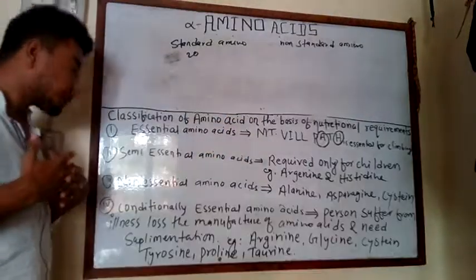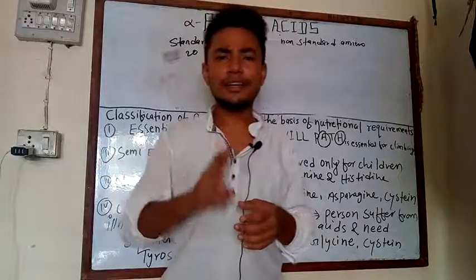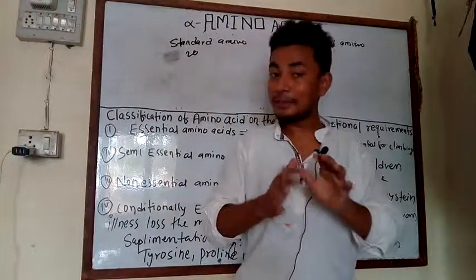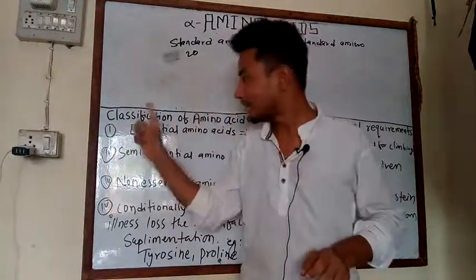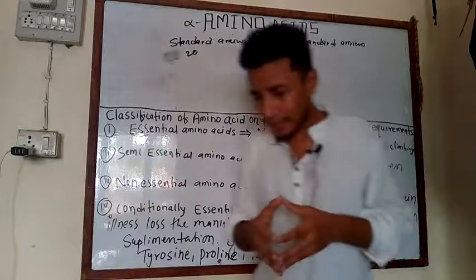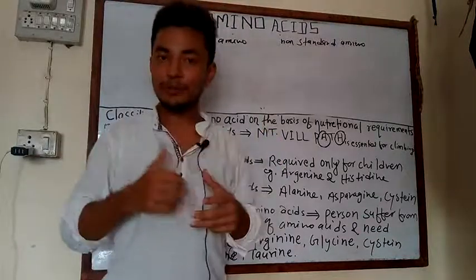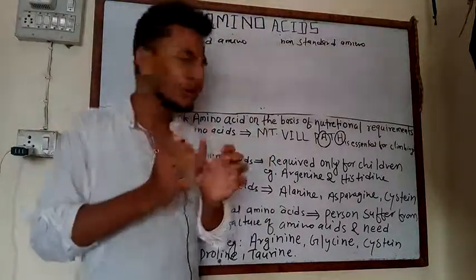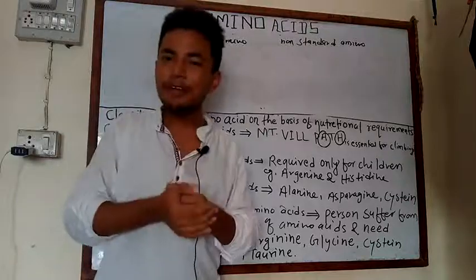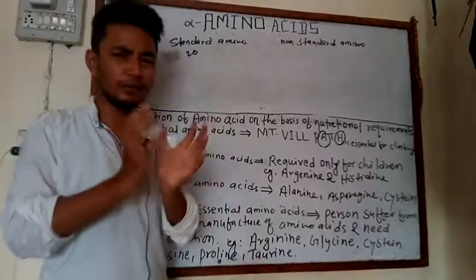To summarize: at the surface level, amino acids are divided into two categories — essential and non-essential — but in deeper study there are four types: essential, semi-essential, non-essential, and conditionally essential. If you have any problems, please comment below, and don't forget to subscribe to my YouTube channel. This video is useful for medical entrance and other examinations. Thank you, bye bye, take care.